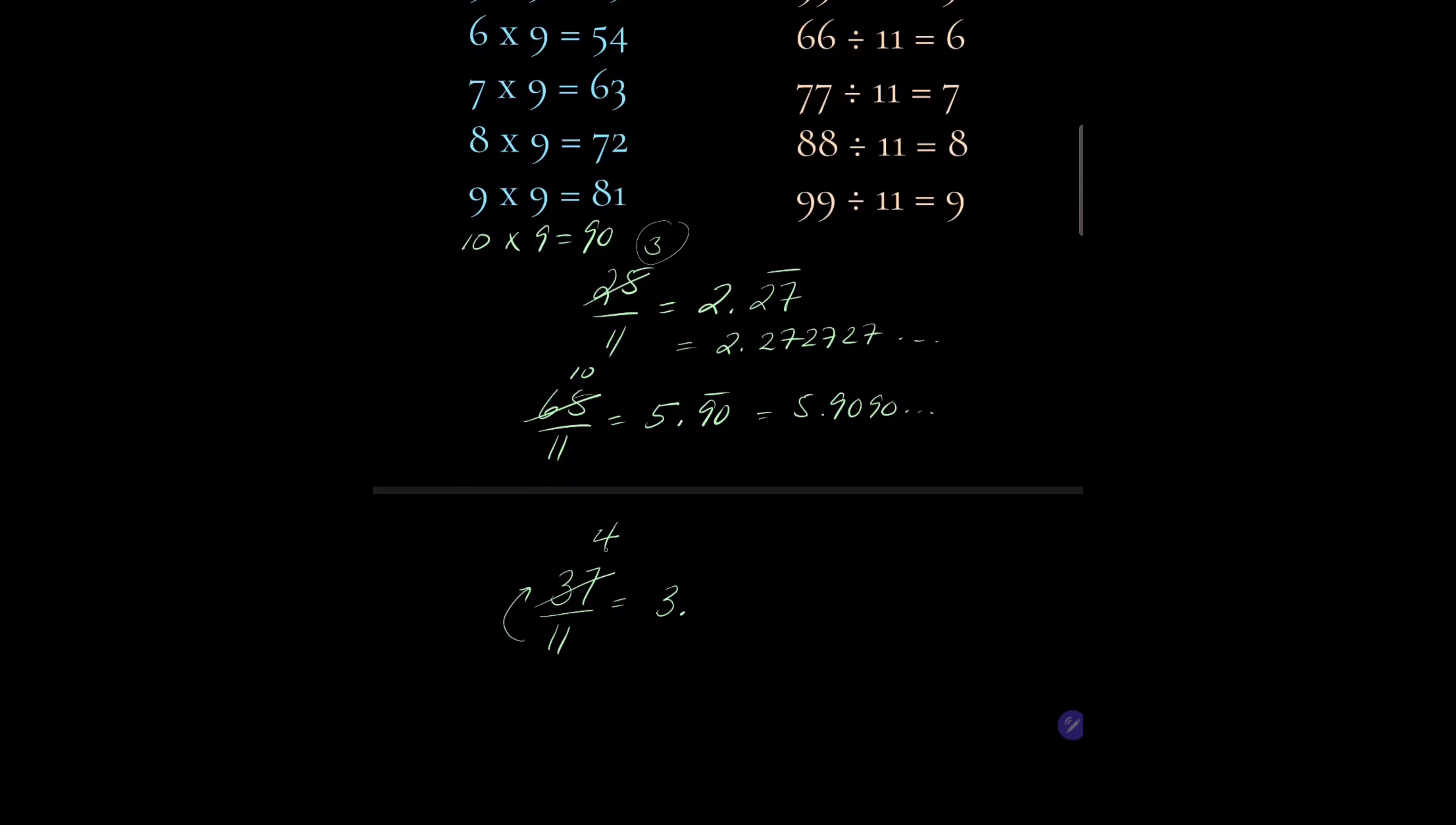So you write 3 point, and 11 times 3 is 33. Subtract 33 from 37 and we're left with 4. Multiply 4 by 9 and you get 36, so the answer is 3.363636, and this goes on forever. Hope you enjoyed this video.